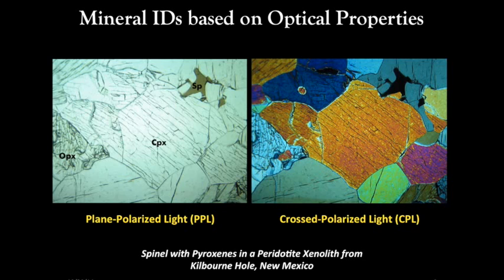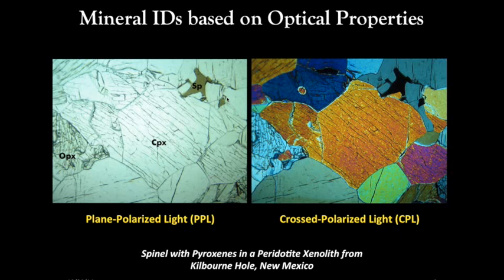The big thing about using the optical microscope is that we can identify different types of minerals based on their optical properties. In this peridotite xenolith, under plain polarized light it's mostly featureless — you see a brownish colored crystal and whitish colored crystals. Under cross polarized light, the brownish crystal goes completely black while others have bright colors. For example, there's orthopyroxene with a bluish color, clinopyroxenes with a bright orange color, and spinels that are dark black.